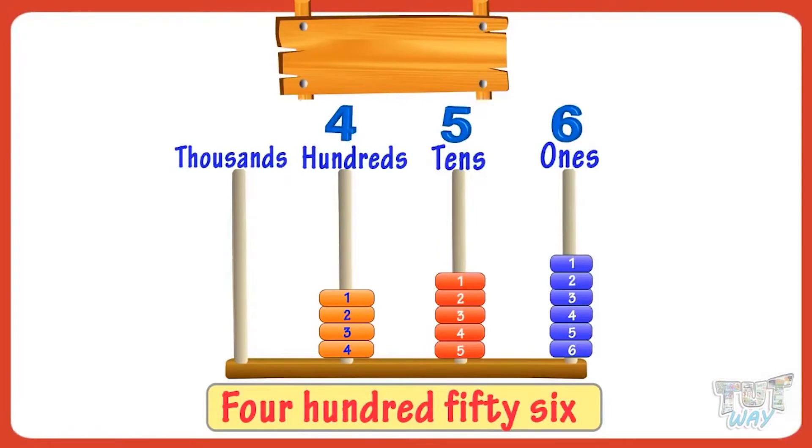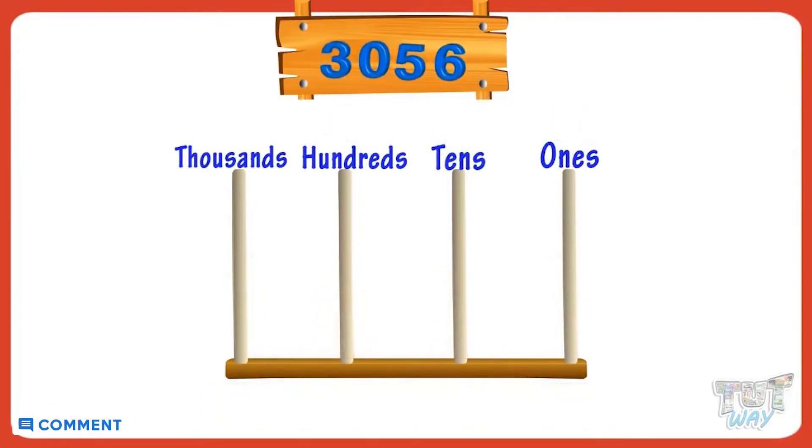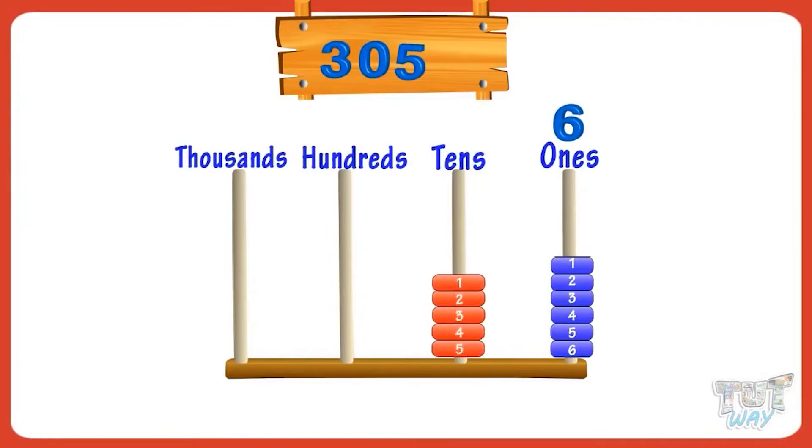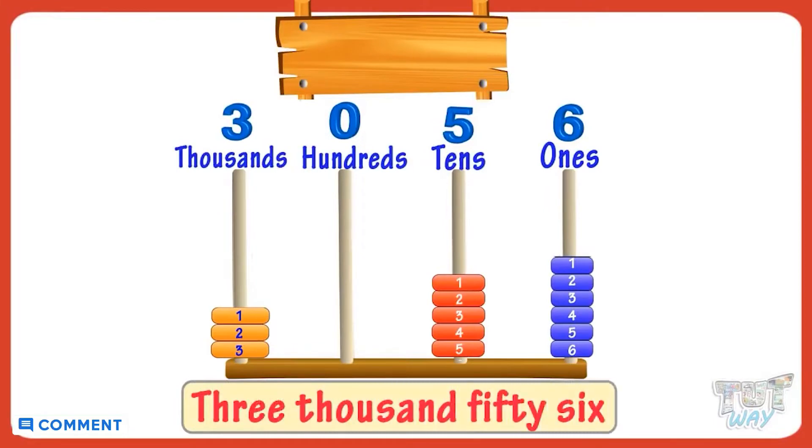Let's take another example. There are zero hundreds in the number, and we have three thousands in the number. Now, we can name this number as three thousand and fifty-six. Good!